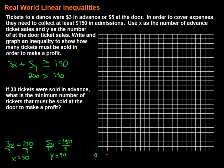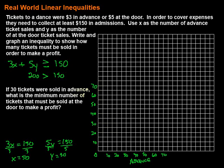We're going up to 50 and 30, so let's label by 5's along both axes, going up to about 70. The x-axis represents advance sales, and the y-axis represents at-the-door sales.